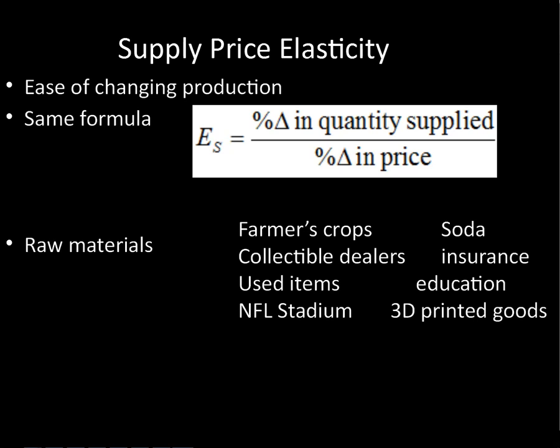What are the determinants of supply elasticity? First, how easy is it to acquire and store raw materials — if it's really hard to get inputs, it's harder to change your supply at different prices. For example, a uranium-based product is much harder. Second, product complexity matters: if a product has a lot of parts — like an iPhone or Samsung phone made across many countries — it's a very complex product, and if the price decreases they're not going to cut back a lot because those supply chains are elaborate.